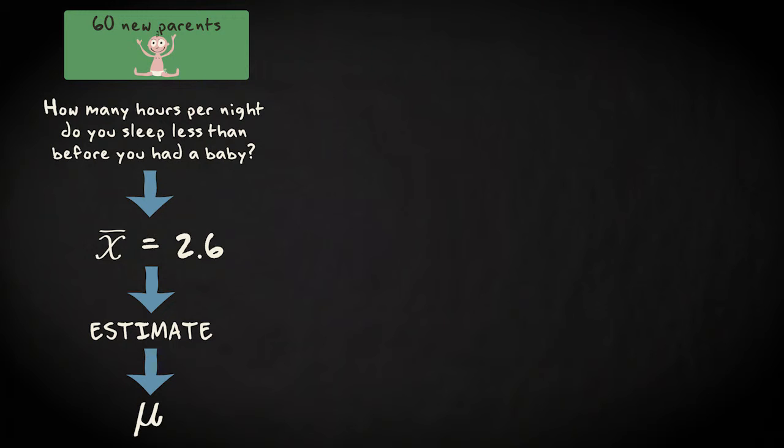However, one individual point estimate doesn't tell us if the estimate is close to the population parameter we're interested in or not. Therefore, next to a point estimate, researchers often also want to know the likely precision of the point estimate. They show this likely precision by also computing an interval estimate. An interval estimate is a range of numbers which, most likely, contains the actual population value.